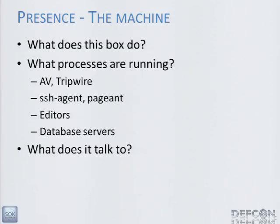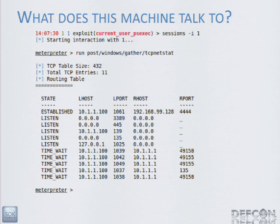What does this box talk to? You want to find out: can this machine talk to something that you're interested in? Your goal is usually data — not a box, but where the data lives. Metasploit does that with the TCP netstat module, which does exactly what it sounds like. It gives you a list of what it's connected to and a list of servers that are listening. This simple module gives you a lot of information and saves you the effort of having to drop to a shell.